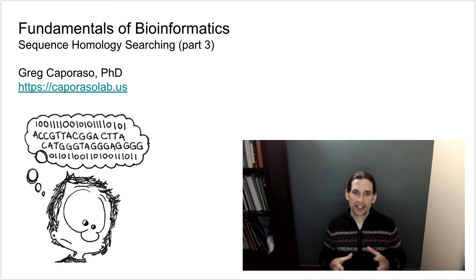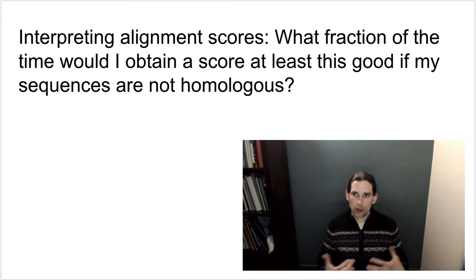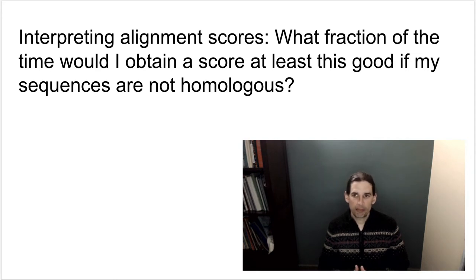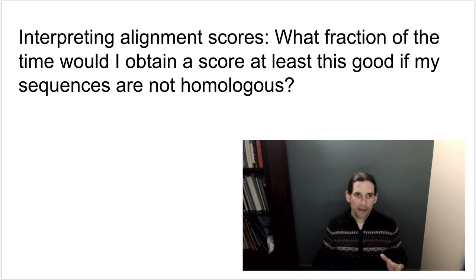When I say high-scoring amino acids, I mean amino acids that have lots of high scores associated with them. When we compare a pair of sequences, we are really trying to interpret that alignment score to ask: what fraction of the time would I obtain a score at least this good if my sequences are not homologous? Recall that one of the main purposes of a sequence alignment is to identify homology between pairs of sequences, and this sounds a lot like the definition of a p-value.